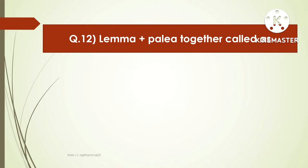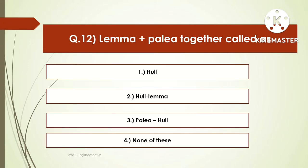The next question is: lemma plus palea together are called as — options are hull, hull-lemma, palea, or none of these.